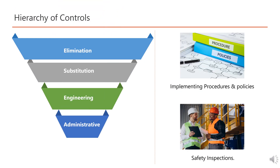The fourth level is Administrative Controls. This involves implementing procedures and policies to control hazards, such as providing safety training and conducting regular safety inspections. Administrative controls can be effective in reducing the risk of harm, but they may not completely eliminate the hazard. An example includes providing training to employees.